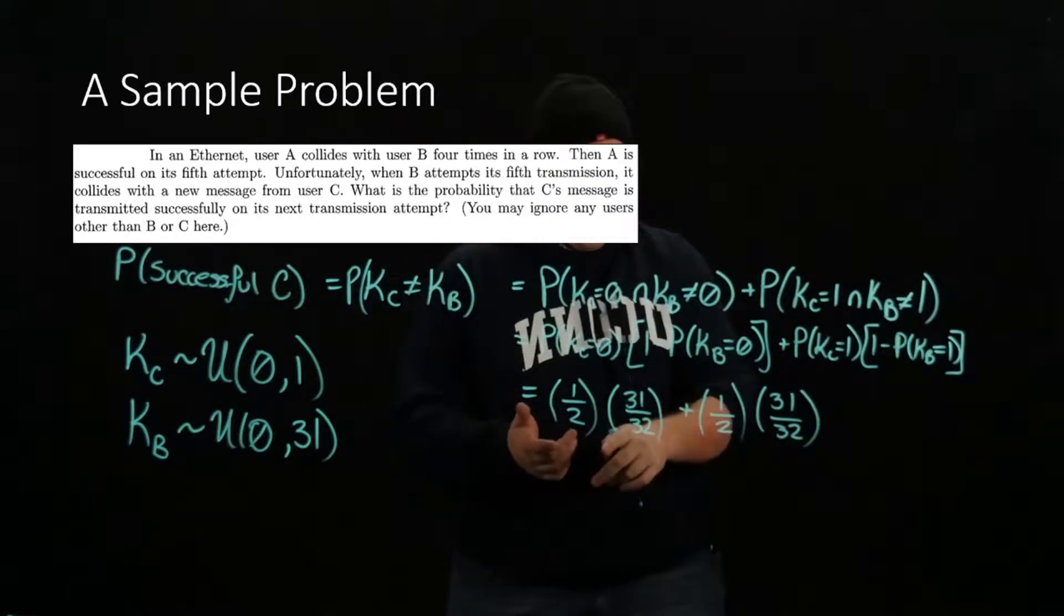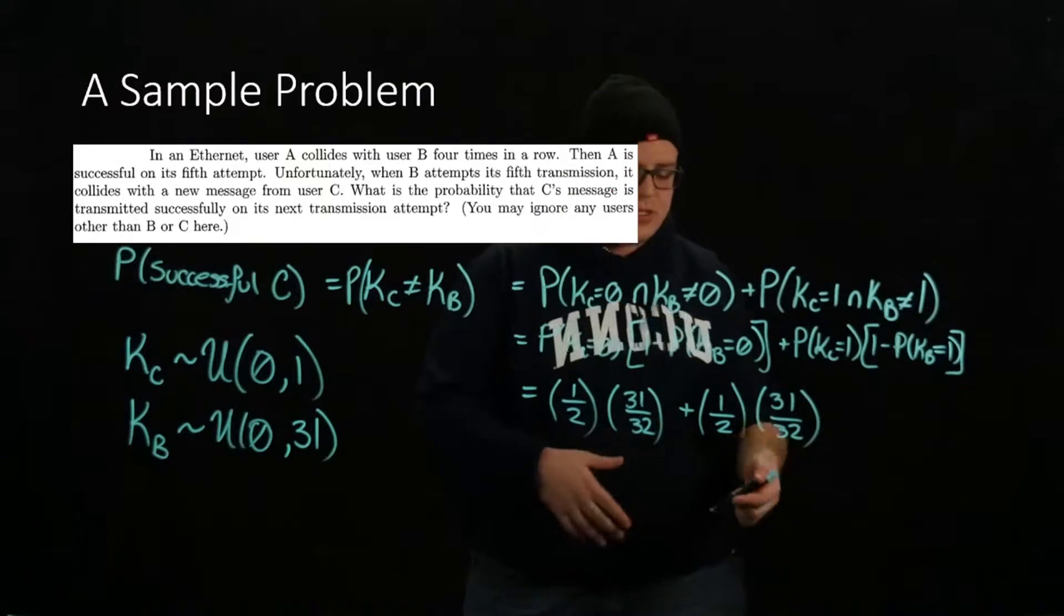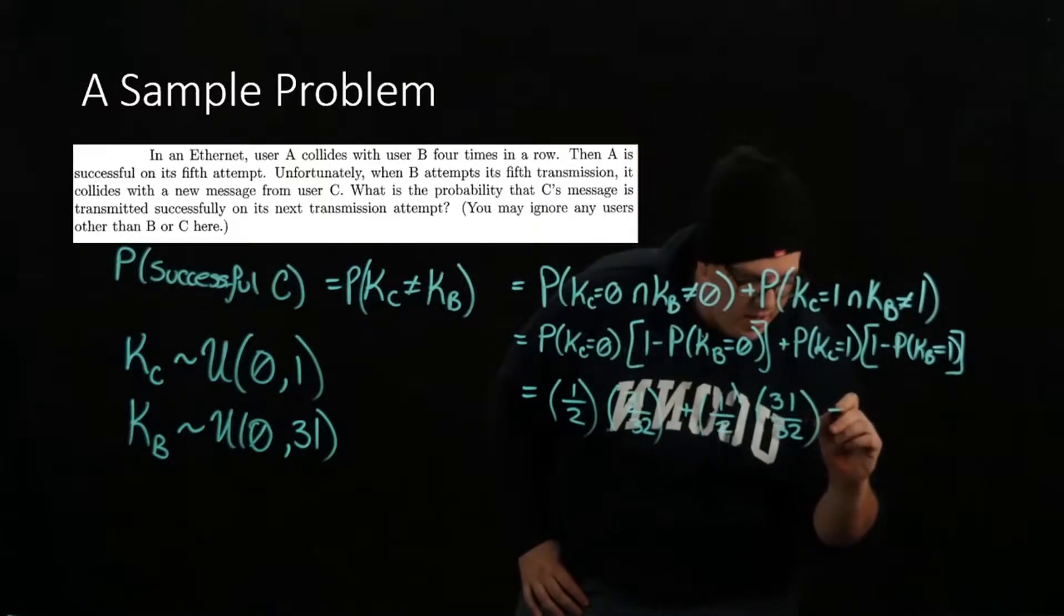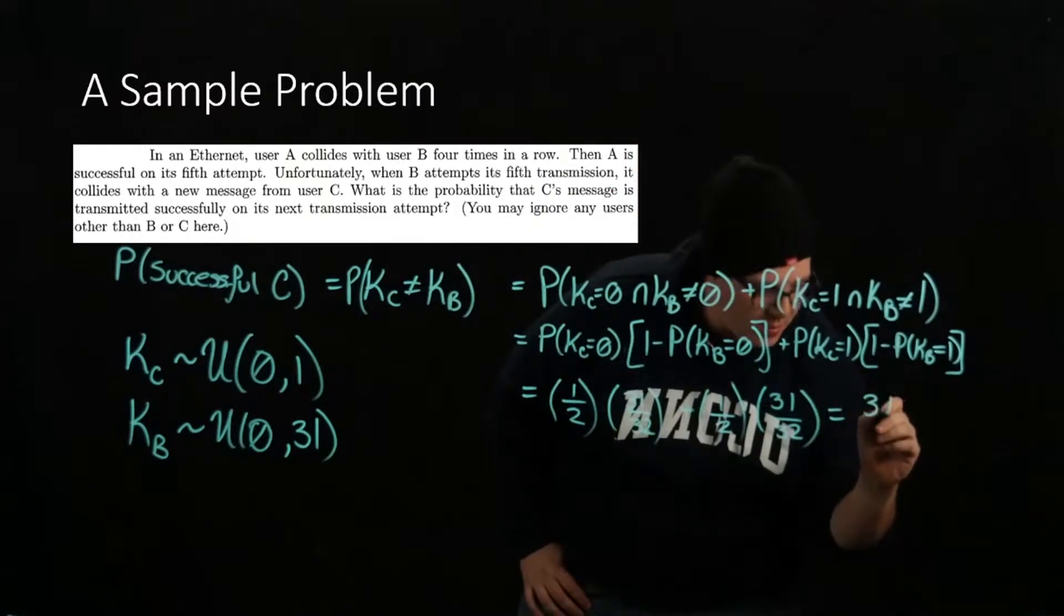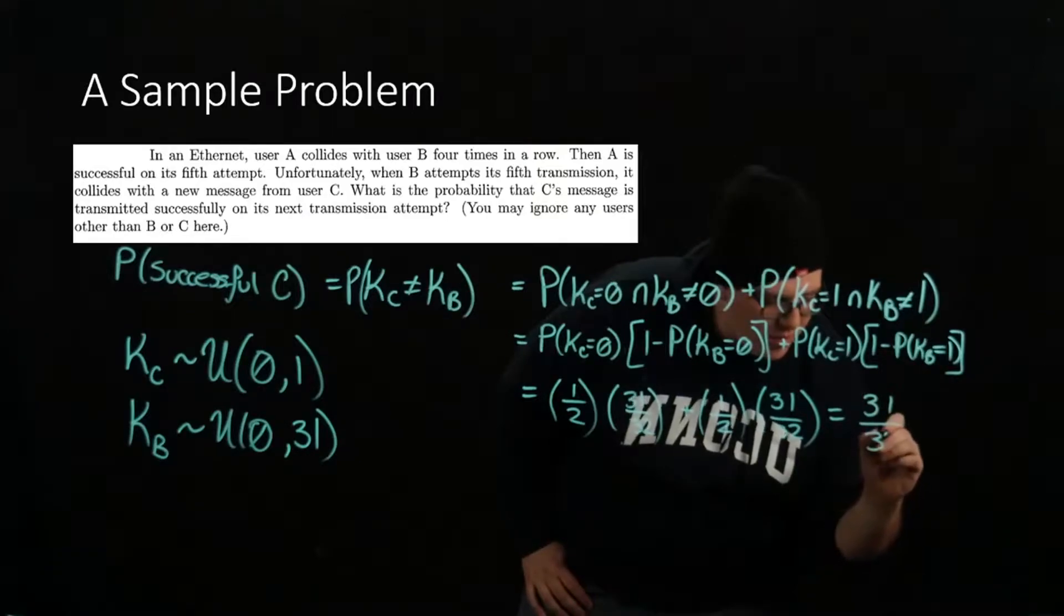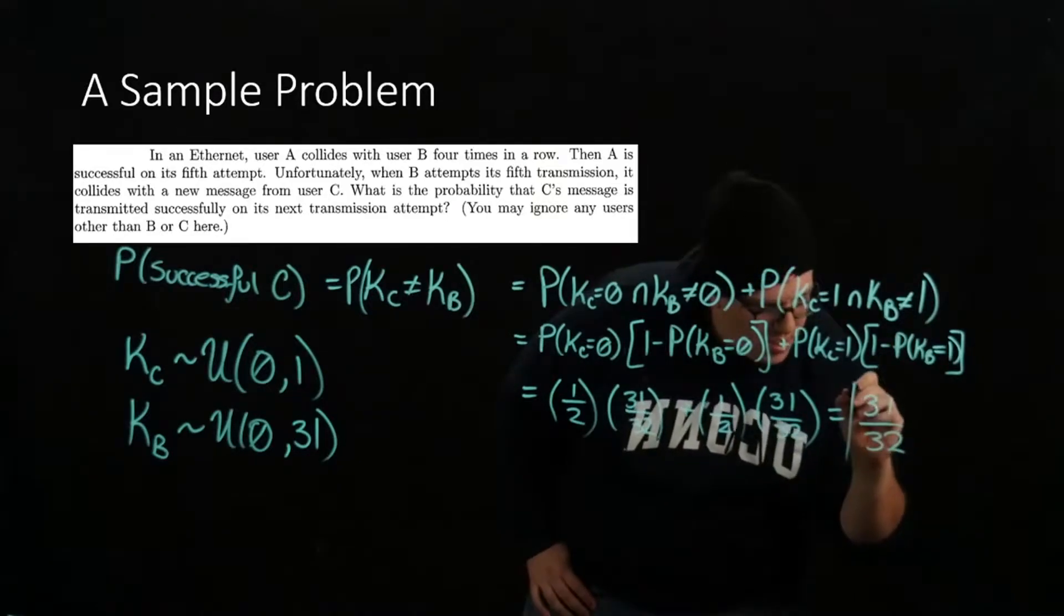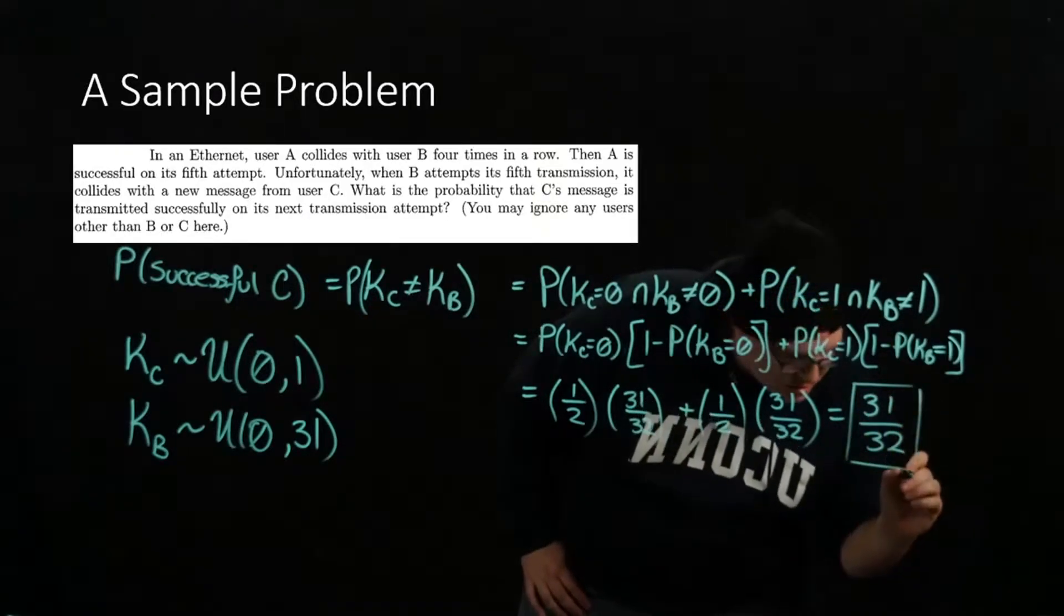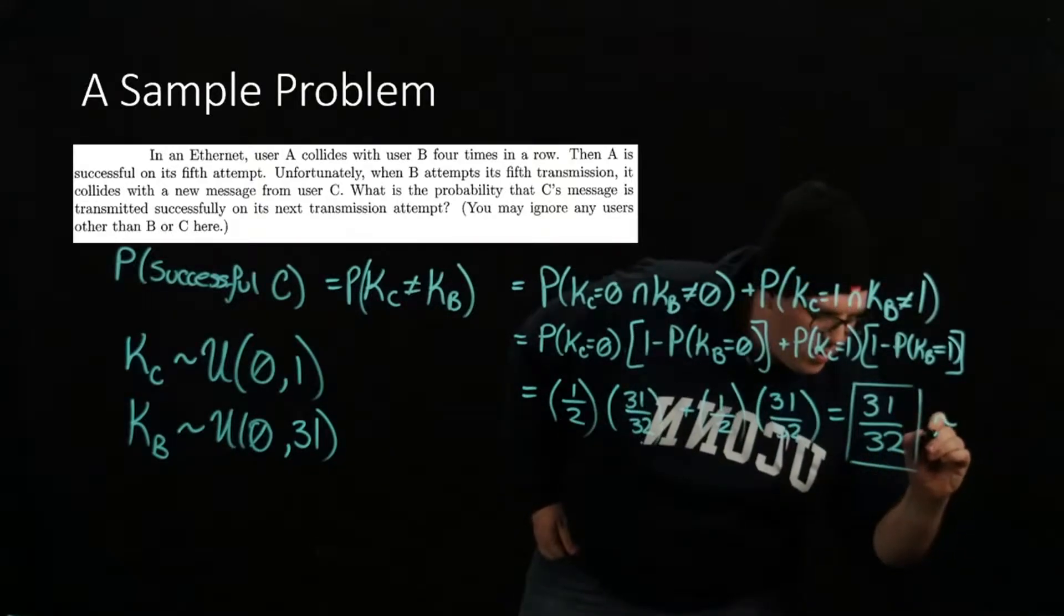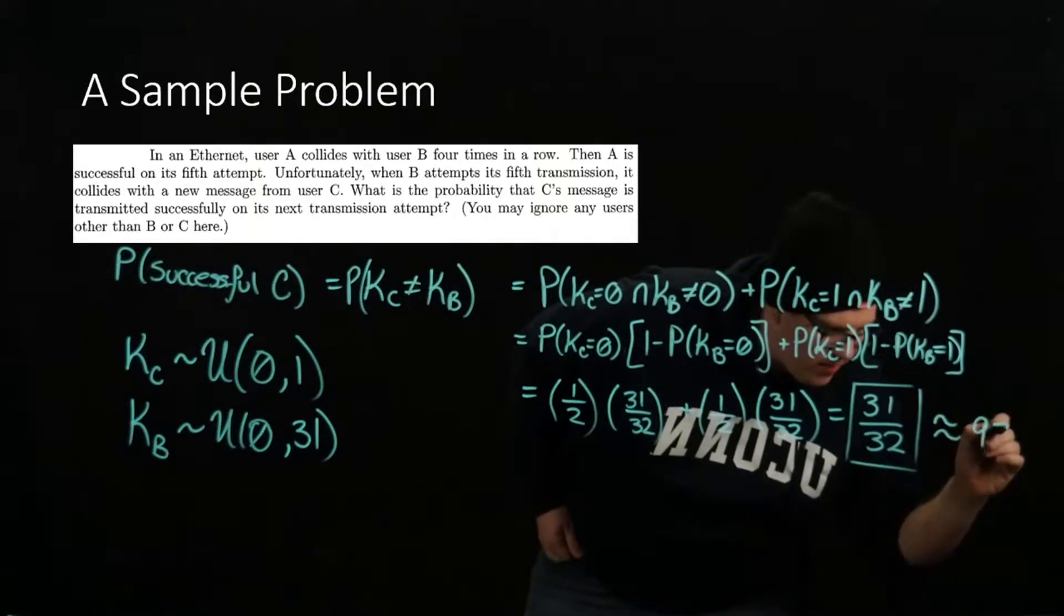We have a half times a number plus a half times the same number, so that's just that number. In the end, we get that the probability is 31 over 32, and that's about 97%.